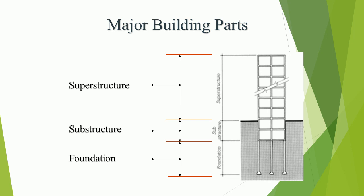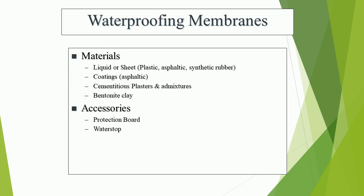The figure shows the major building parts. Waterproofing membranes — materials include liquid or sheet forms: plastic, asphaltic, and synthetic rubber. Coatings include asphaltic types. Cementitious plasters and admixtures are also used.